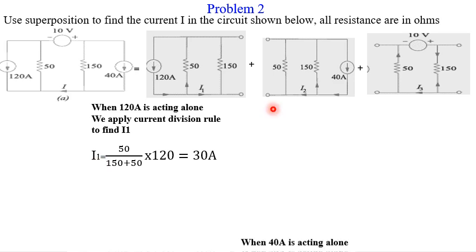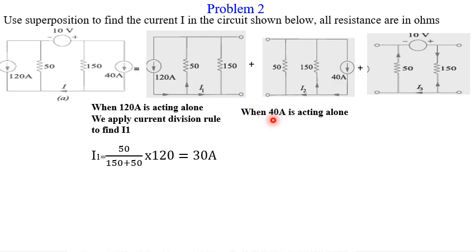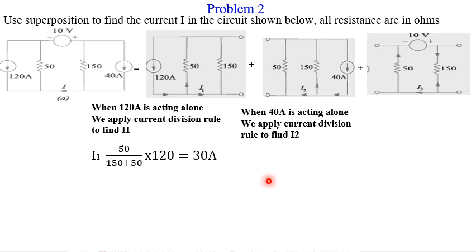When the 40-amp source is acting alone, we take the other sources out. The current I2 is through the 50-ohm resistor. The 40-amp total current is split between the 150-ohm and 50-ohm resistors. Using current division: I2 equals 150 over (50 plus 150) times 40, which also gives us 30 amps.